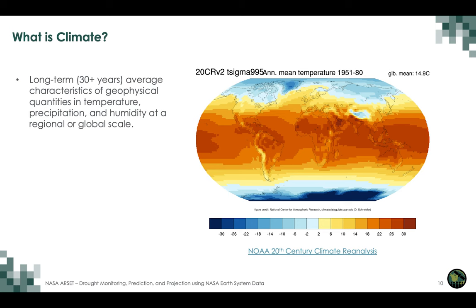So what is climate? It is defined as long-term average characteristics of geophysical quantities such as temperature, precipitation and humidity at a regional or global scale. The key word is long-term — at least 30 years or longer. A similar climate quantity can be defined for land surface parameters such as soil moisture or vegetation index. An example shown here is a NOAA 30-year mean map of temperature, where global mean temperature is 14.9 degrees Celsius — this is an example of temperature climatology.